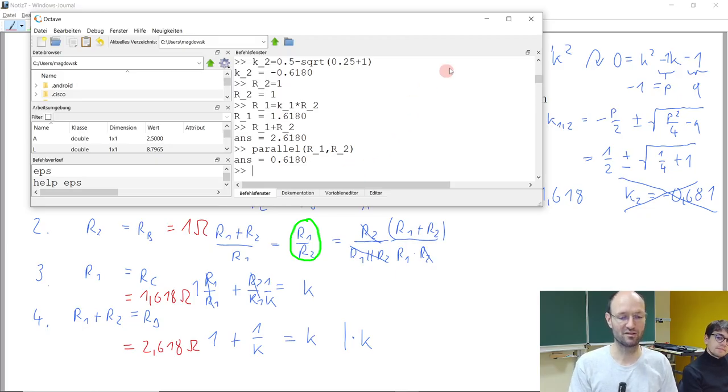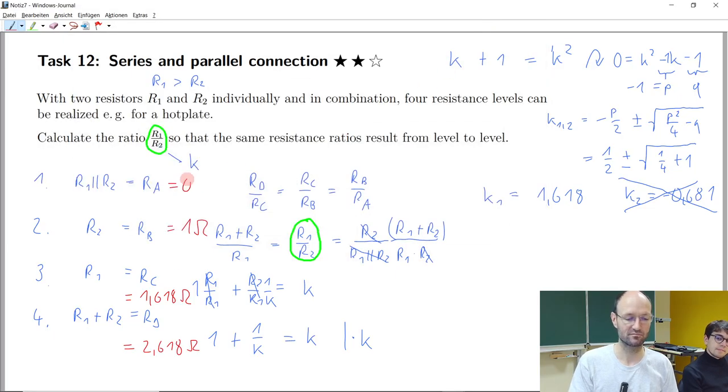And if I once again take this parallel collection, interestingly we're at 0.618.